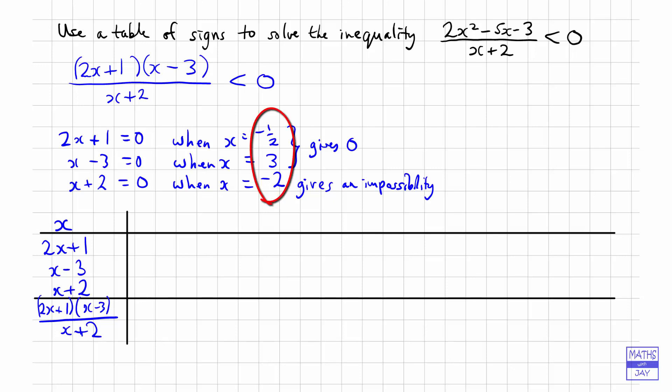So we have got minus 2, minus 1 half, and 3, starting with the lowest and going up to the highest. So that means the first column is going to start at the lowest possible value, so minus infinity, and go up to the lowest possible value we have found one of the factors, which is minus 2.